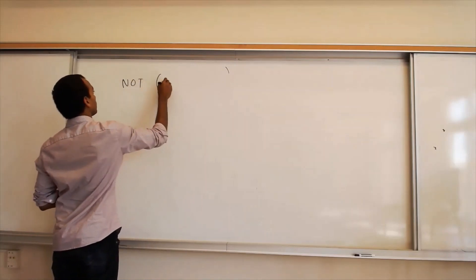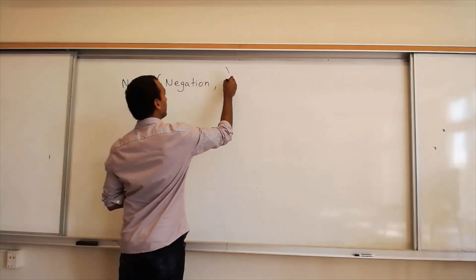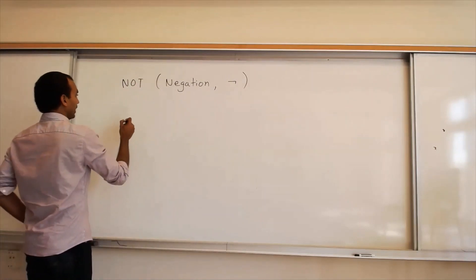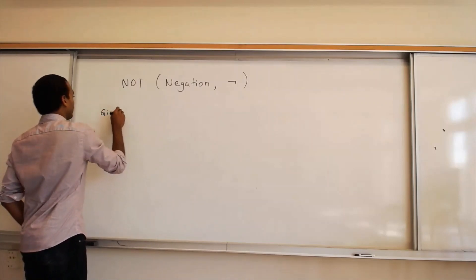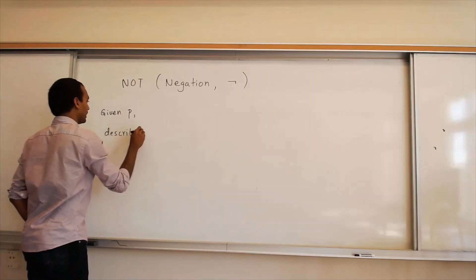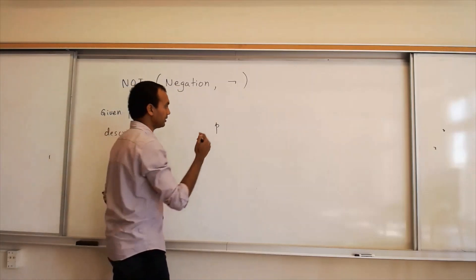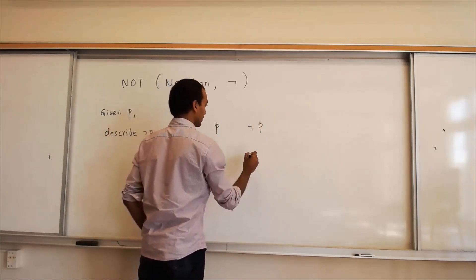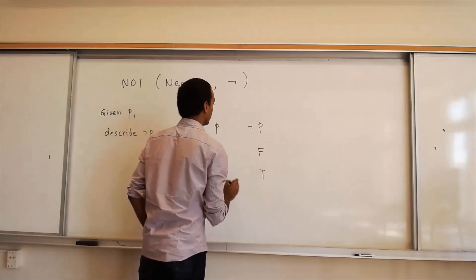Now let's describe what negation means. 'Not,' also called negation, is denoted by ¬. It is an operation on one proposition. Given P, we describe negation of P: if P is true, negation of P is defined to be false; and when P is false, negation of P is defined to be true.